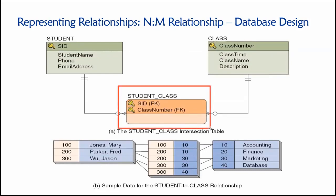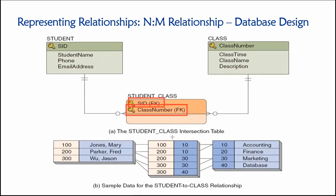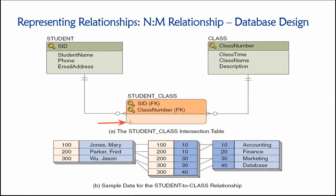Do note that this is an ID-dependent weak entity, because in order to add a row to this student-class table, we are relying on the keys from the connected parent tables. This is a classic intersection table where the only columns are the keys. The difference between an intersection table and an associative entity is whether or not we have any non-key attributes. Currently, the only attributes in this table are key attributes — there are no non-key attributes.